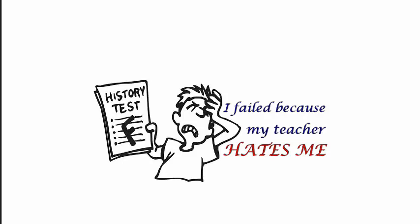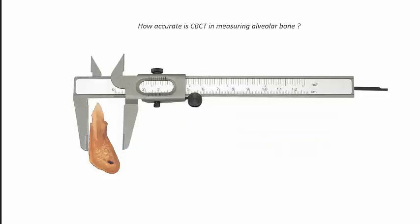What does that really mean? I think it's necessary to talk about the accuracy of cone beam CT in measuring not only the dehiscence or fenestration, but actually the anatomy — the size and shape of the alveolar housing.